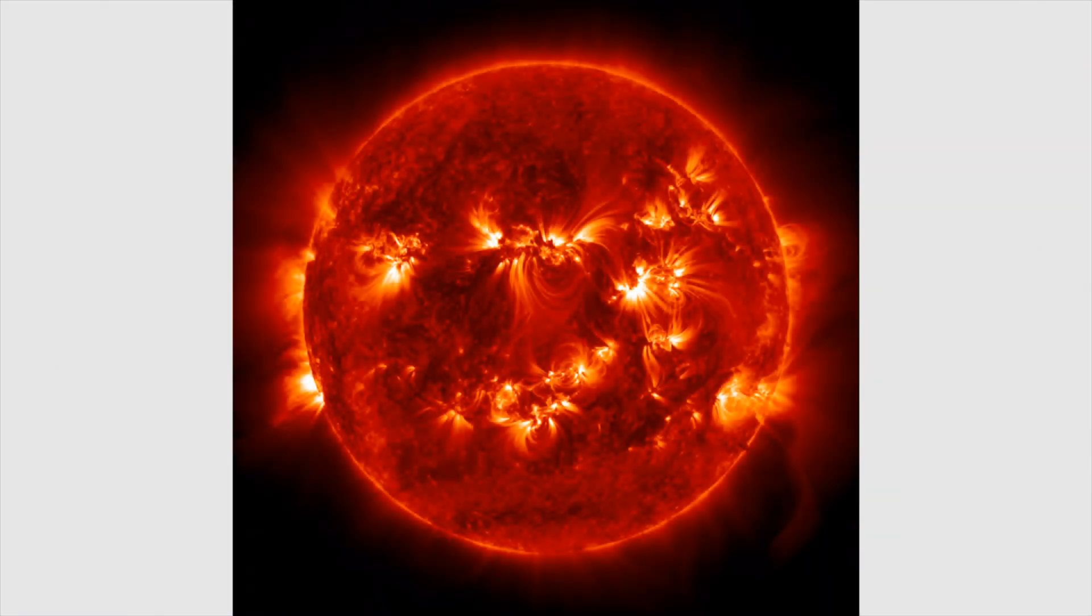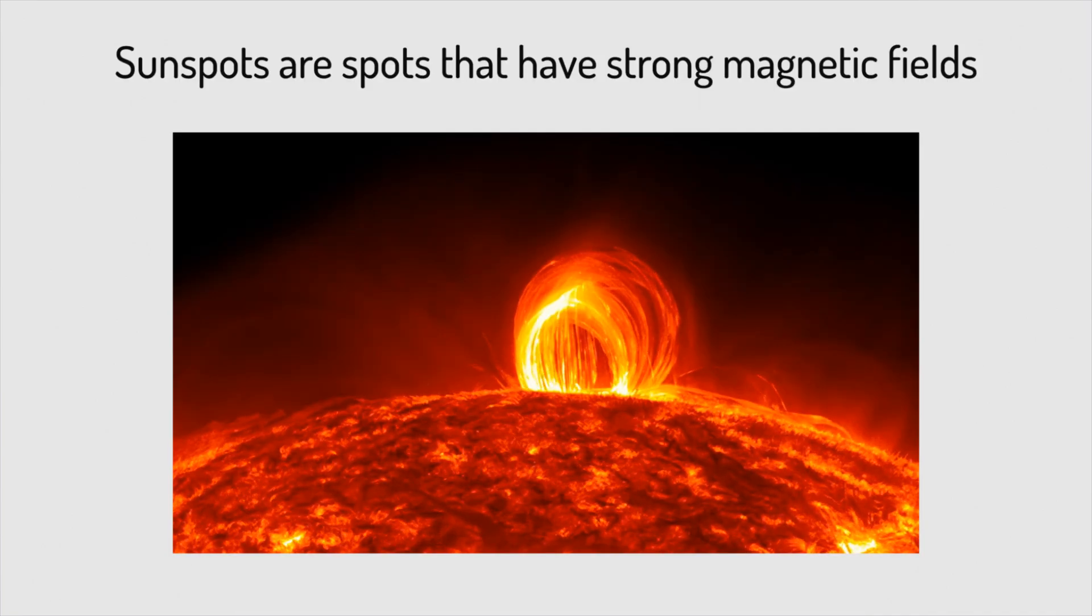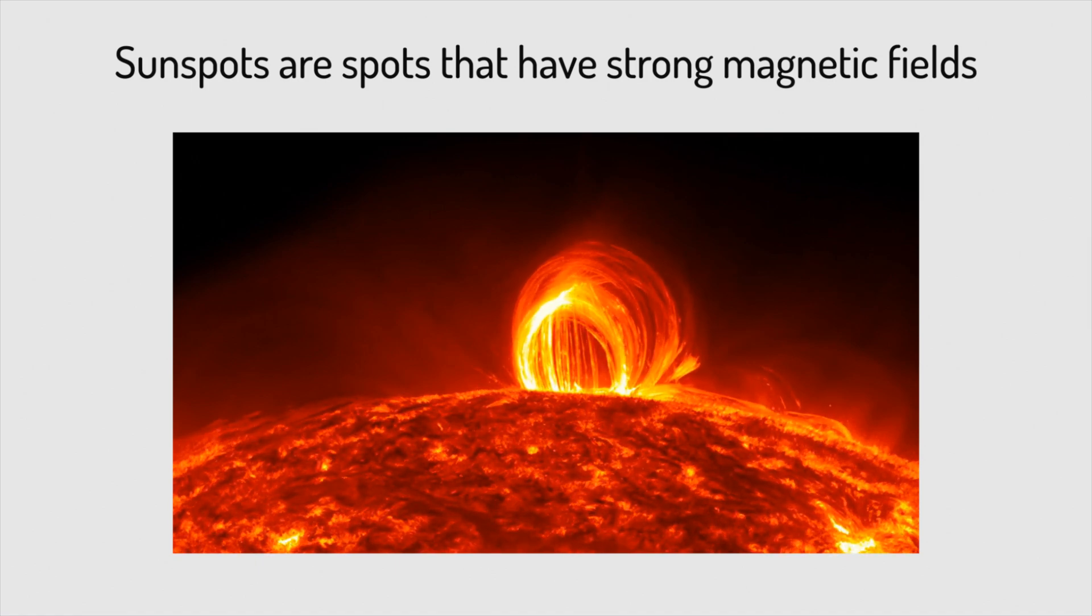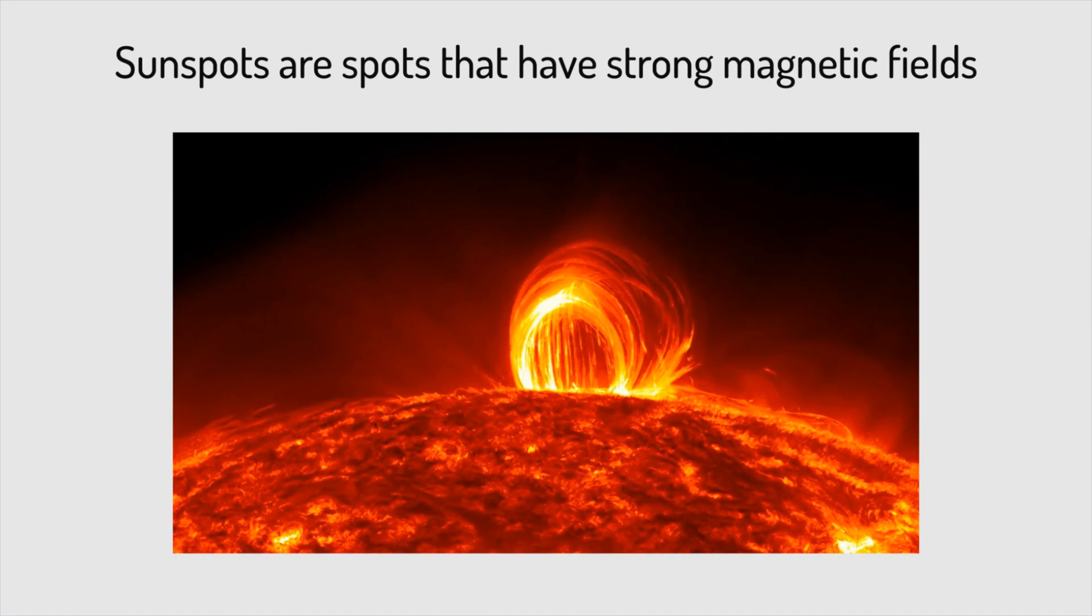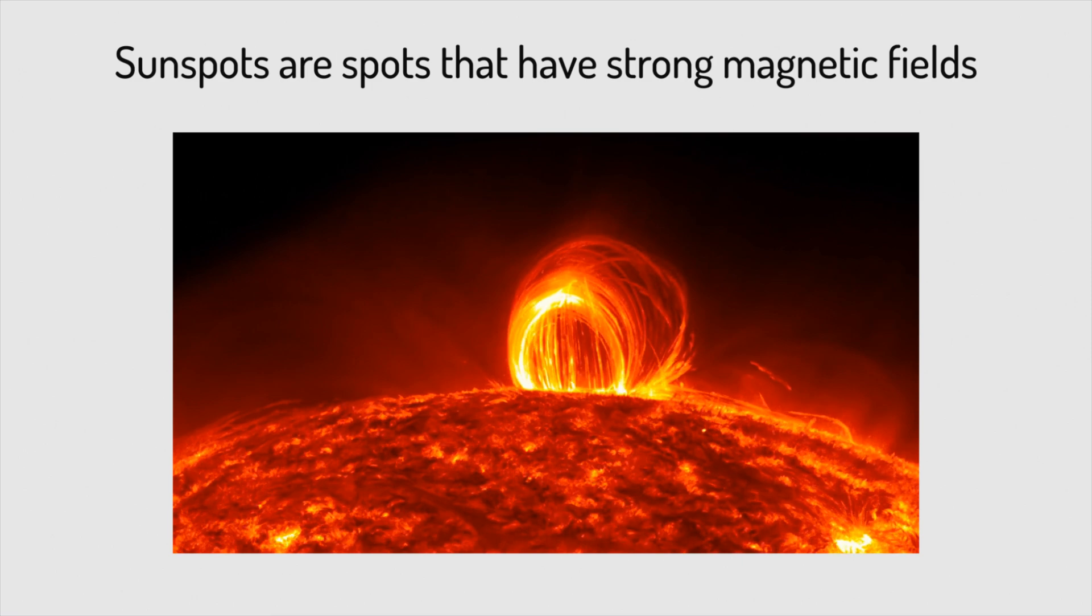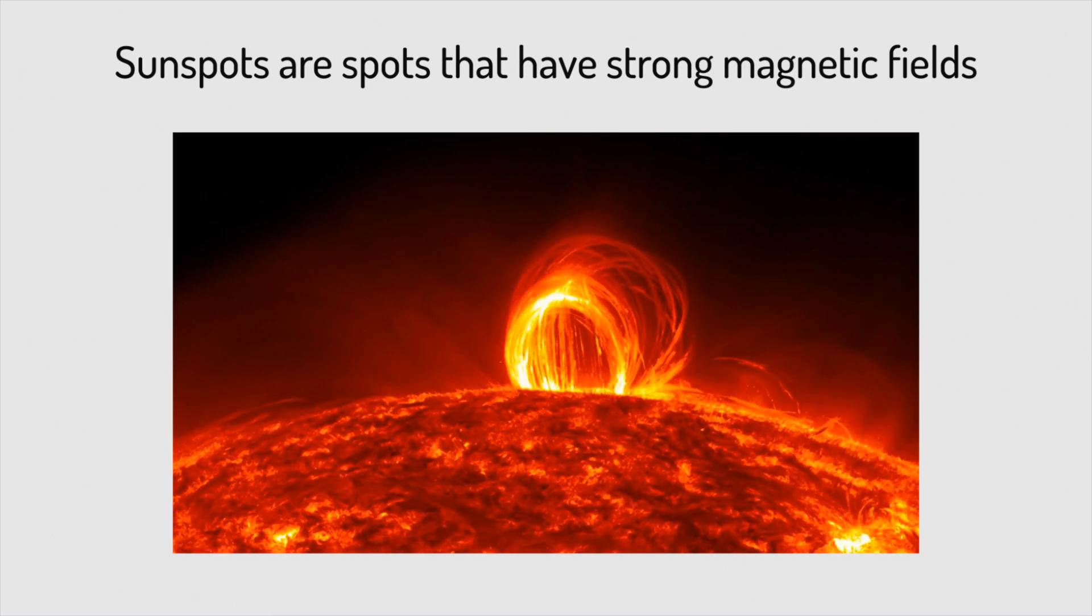On the surface of stars like our sun, a complex network of magnetic fields emerges from beneath the surface. The interaction of oppositely directed magnetic fields drives solar flares and coronal mass ejections that can impact the space environment near Earth.